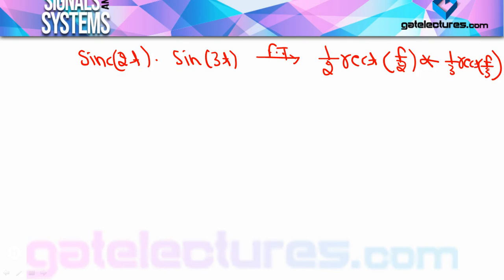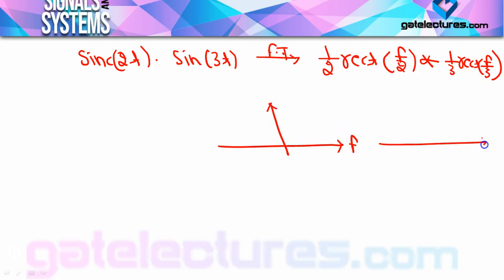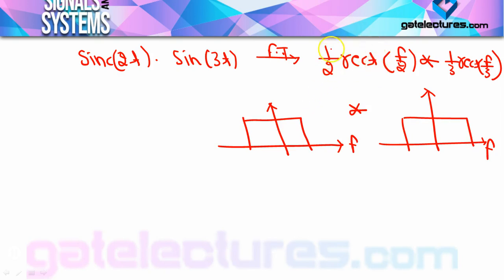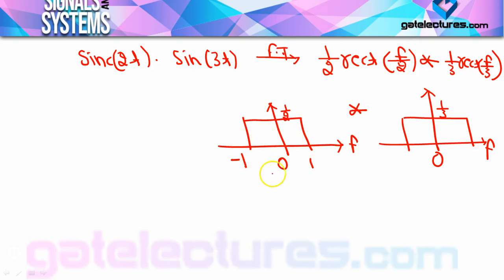अगर मैं दोनों rect signals को draw करूँ — x-axis पर frequency है। पहला signal (1/2)·rect(f/2): rect के सामने लिखा होता है amplitude (1/2), और tau = 2 है, तो range होगी -1 से +1, total width = 2। दूसरा signal (1/3)·rect(f/3): amplitude = 1/3, total width = 3, range = -1.5 से +1.5।